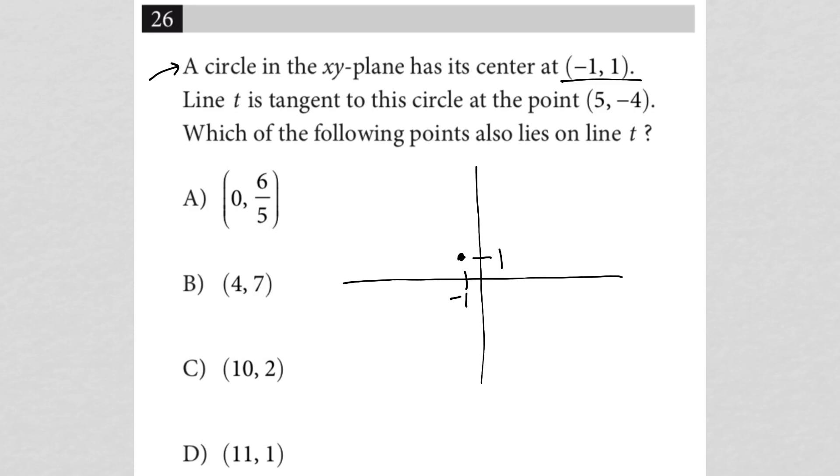The next sentence says line T is a tangent to this circle at the point 5, negative 4. So I'm going to draw that point on the circle, 1, 2, 3, 4, 5, so 5, 1, 2, 3, negative 4. So negative 4.